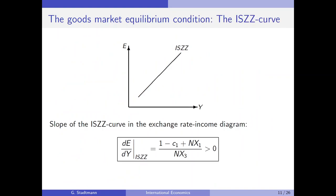We want to work in a diagram where we need to determine whether equilibrium curves have a positive or negative slope. We always need to know what variable is displayed on the vertical axis and which on the horizontal axis. The exchange rate E is on the vertical axis and Y is on the horizontal axis. So when we compute the slope of a curve, we have to compute dE/dY.